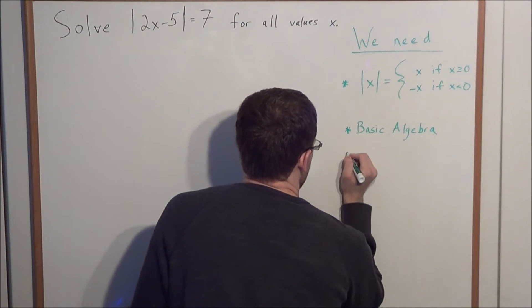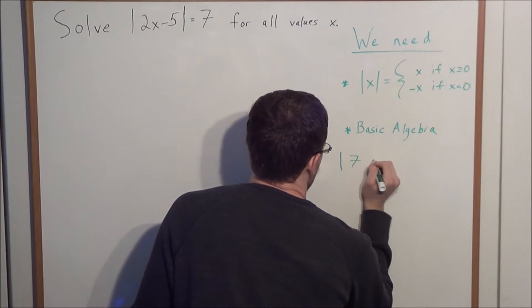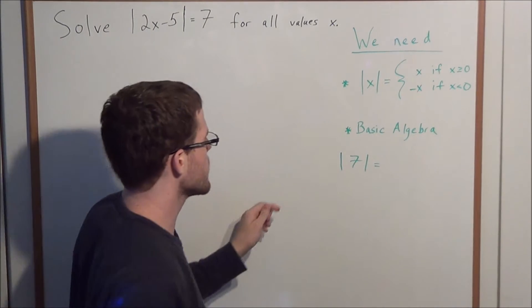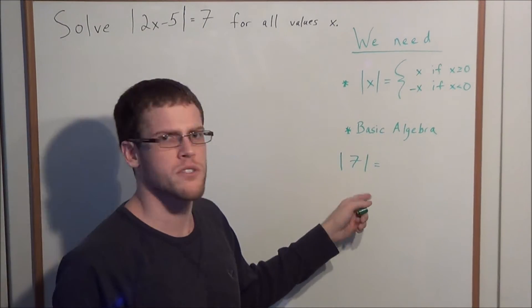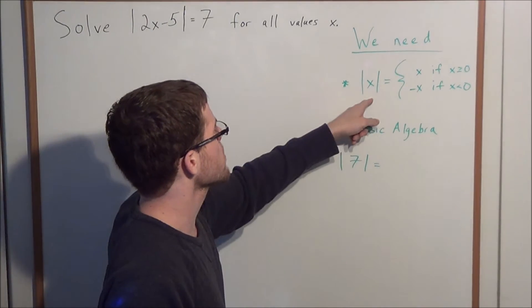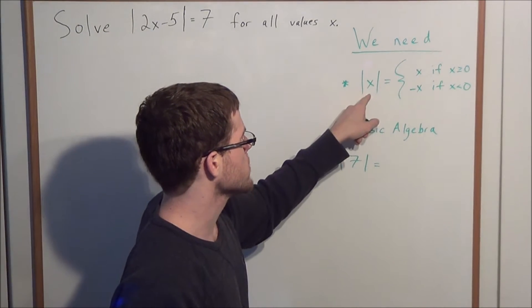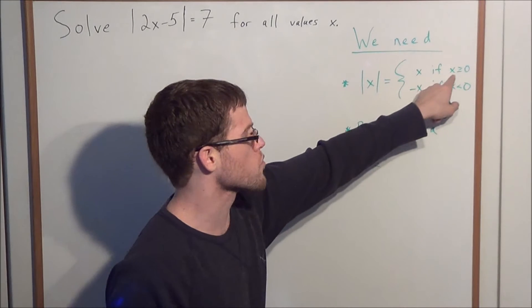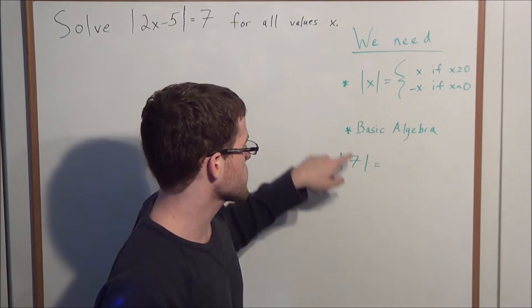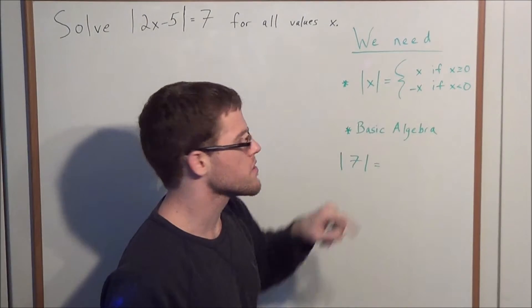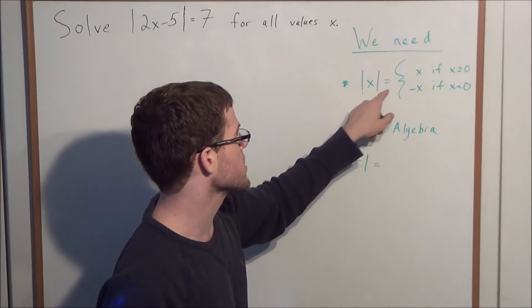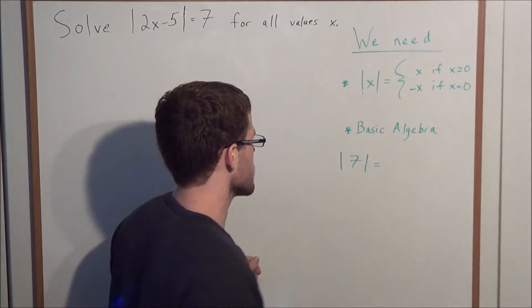For instance, if we're looking at the absolute value of positive 7, using the definition, even though this problem is probably obvious, the absolute value of positive 7, this is an x value which is greater than or equal to 0. So the absolute value of positive 7, we're just going to rewrite, is equal to 7, the input into this absolute value function here.